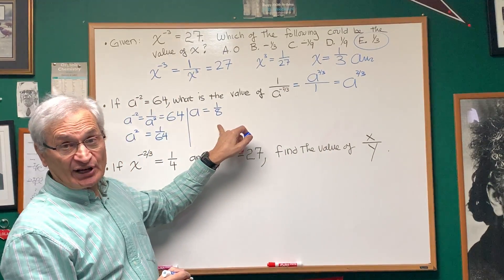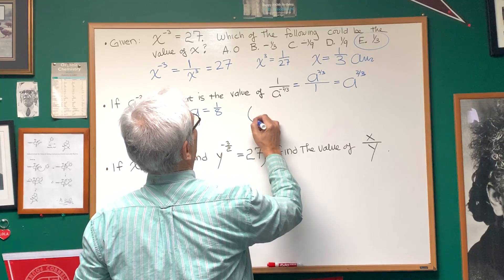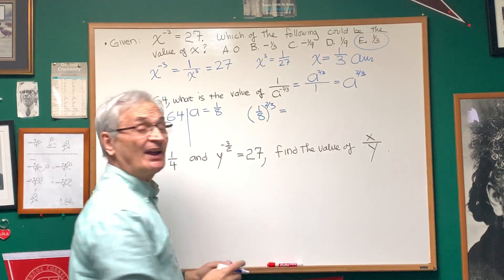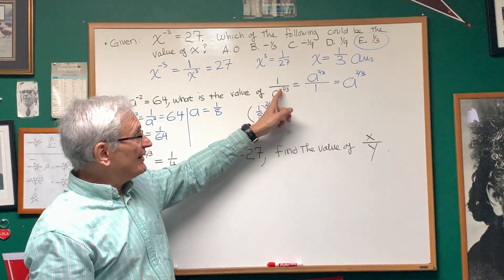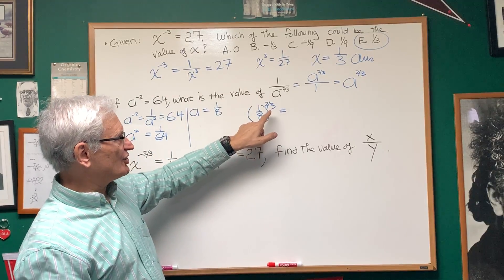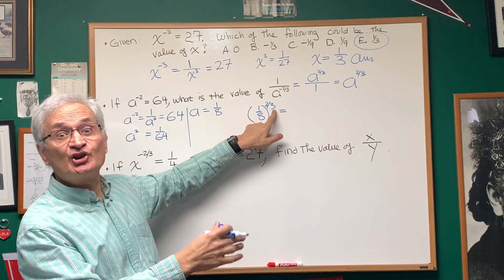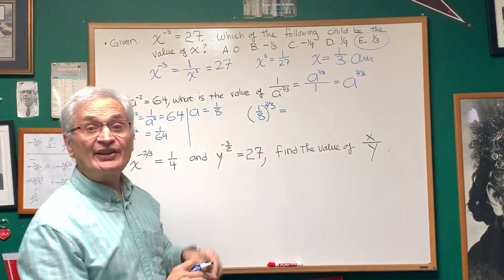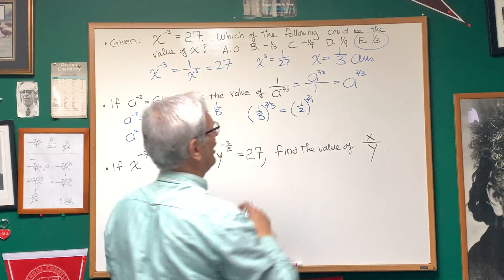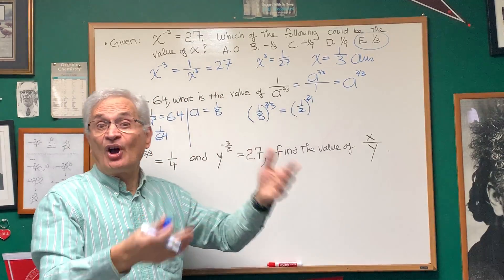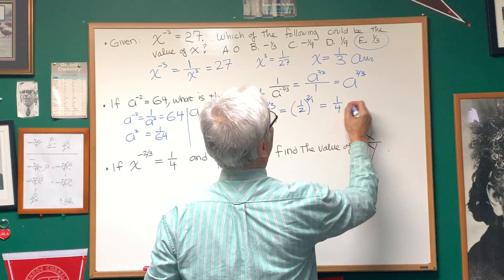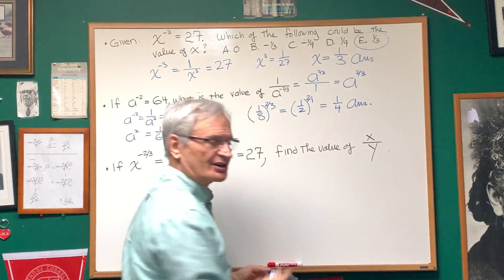We already know that a is equal to one eighth. So let's plug in a as one eighth, taking this to the two thirds power. We follow the remaining two instructions: the three in the denominator says take the cube root. The cube root of one eighth is one half. So this is going to be one half to the two over one — we don't need the three anymore. And one half squared is one fourth. There's our solution.